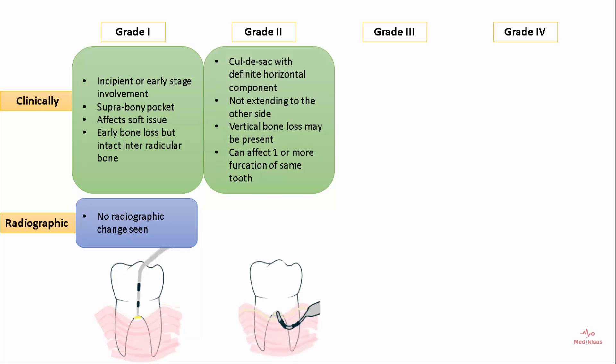Grade 2 furcation involvement is called a cul-de-sac as it has a definite horizontal component, but does not extend to the other side of the furcation. Vertical bone loss may be present and it can affect one or more furcations of the same tooth. Radiographically, Grade 2 furcation is seen as the presence of furcation arrows, and it is difficult to predict in maxillary molars.